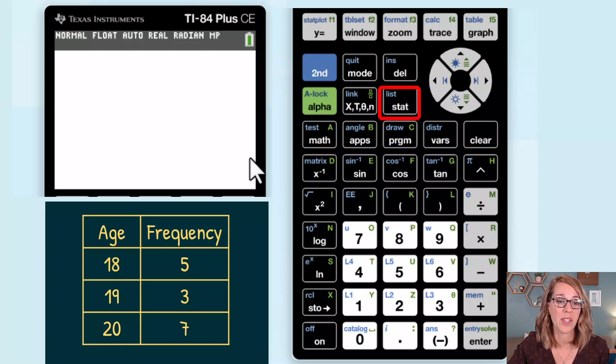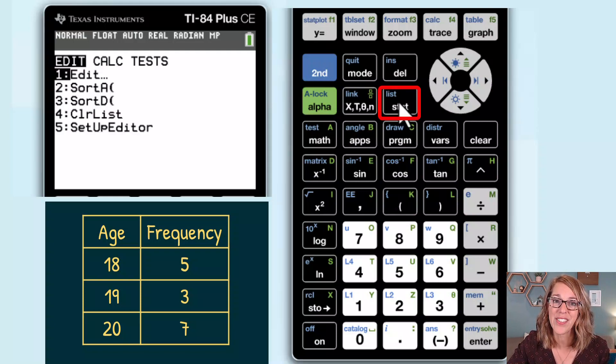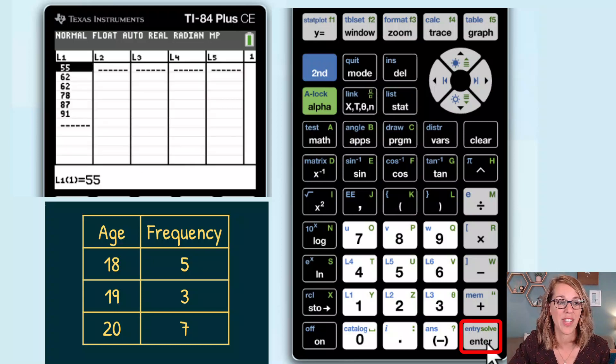The first thing that I want to do is to go into my stat menu. I'm going to enter this data. So I hit stat. I do want edit. So I'm going to hit enter to choose edit.